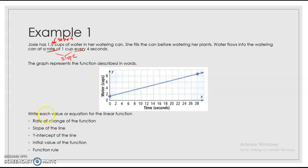So then when we look at this, it says write each value or equation for the linear function. So the first thing says, what is the rate of change of the function? Well, we know one cup for every four seconds, right? One cup every four seconds.